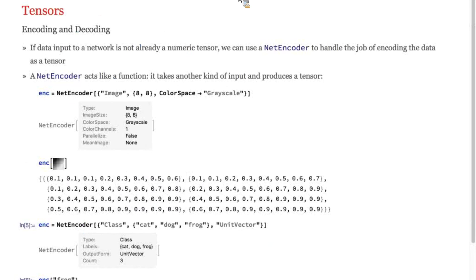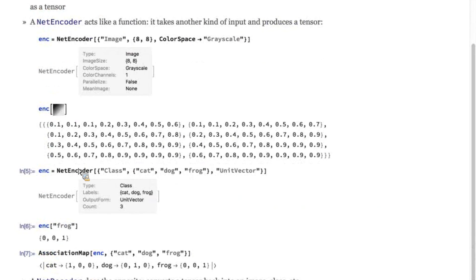To get data like an image into a network, we have to encode it as a tensor. Mathematica makes this easy with net encoders. Here we have an example of encoding a grayscale image into a tensor, and another example of encoding a class consisting of the labels dog, cat, and frog. These get encoded as unit vectors in which exactly one vector component is one, and the others are zero.